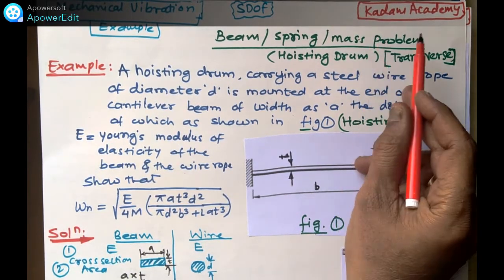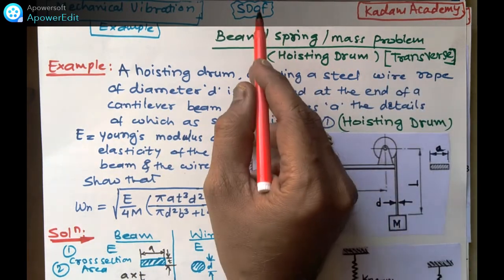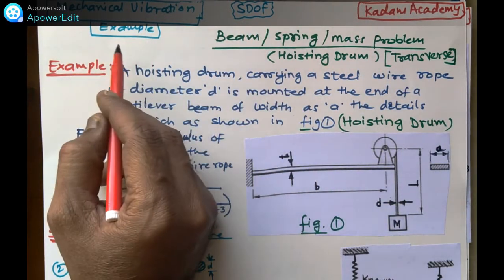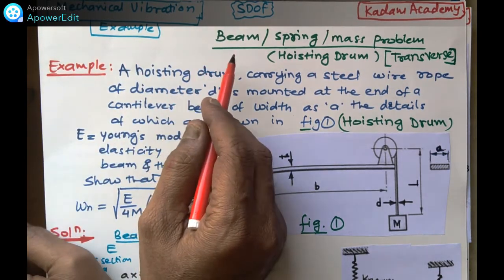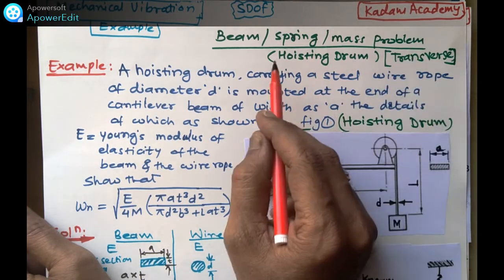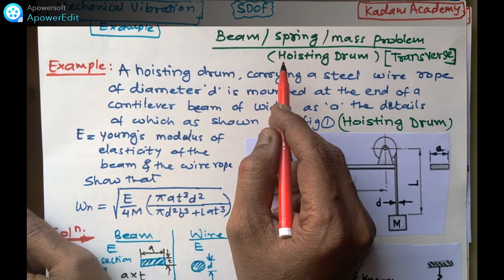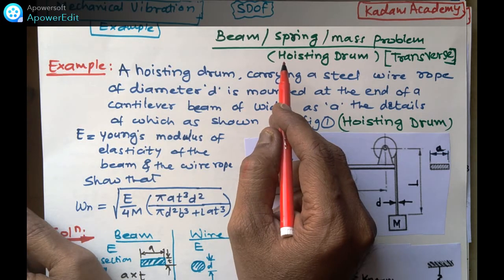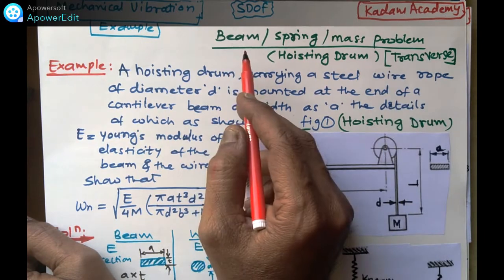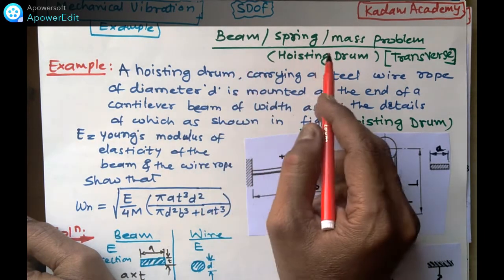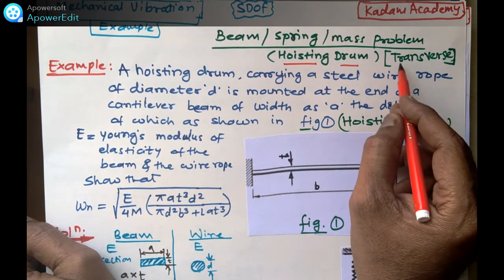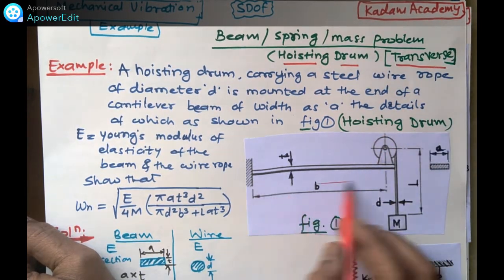Welcome to my YouTube channel Kadham Academy. Friends, this is a single degree of freedom mechanical vibration example. I am going to start it on this Kadham Academy channel. Please go in detail — all the videos are there so you will find various numericals. This numerical is based on the hoisting drum, and it is an example of transverse vibration.